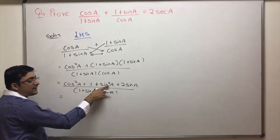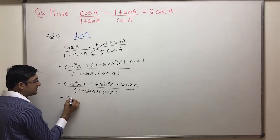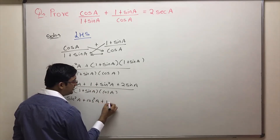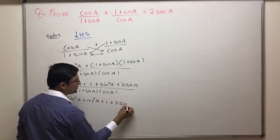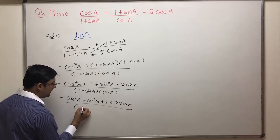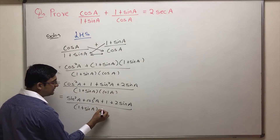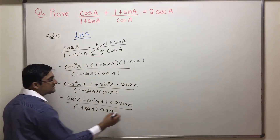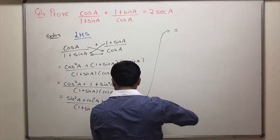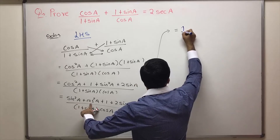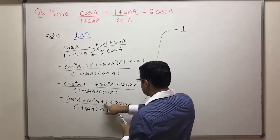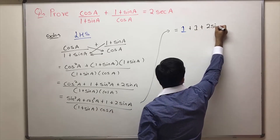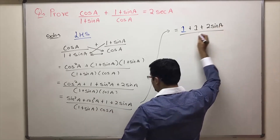Now group the cos squared A and sin squared A together. So we get sin squared A plus cos squared A, plus 1 plus 2 sin A, upon 1 plus sin A into cos A. Now, what is sin squared A plus cos squared A? It is 1 — it's an identity. So this equals 1 plus 1 plus 2 sin A, upon 1 plus sin A into cos A.